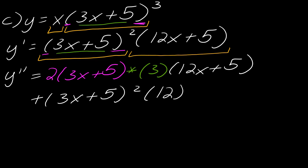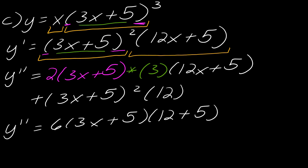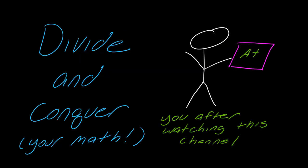So y double prime simplifies to 6 times (3x + 5) times (12x + 5) all plus 12 times (3x + 5) squared. You could simplify this a bit further, but for our purposes the problem is essentially done. Depending on what you need to do with it, or if you're checking a solution manual, you might take it a step further. So that covers it for this particular video — hopefully that was helpful. I'll see you guys next time.